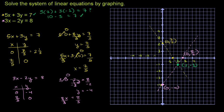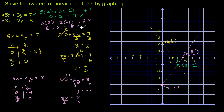Now let's check the second equation with x equals 2, y equals negative 1. We get 3 times 2 minus 2 times negative 1 — that's 6 minus negative 2, which is 6 plus 2, equals 8. It definitely equals 8. So the point (2, negative 1) satisfies both equations, and we've solved the system of linear equations by graphing.